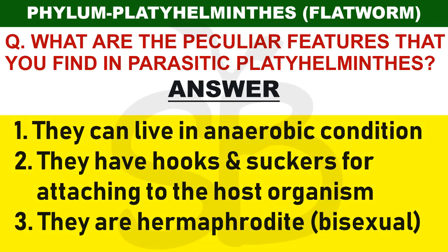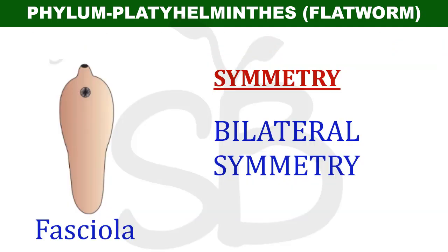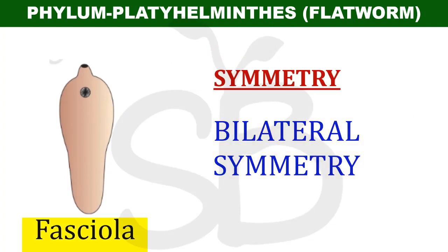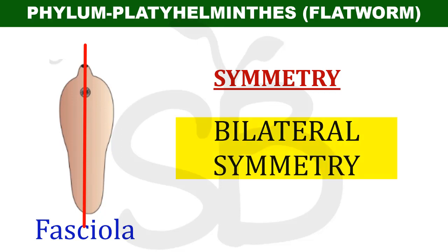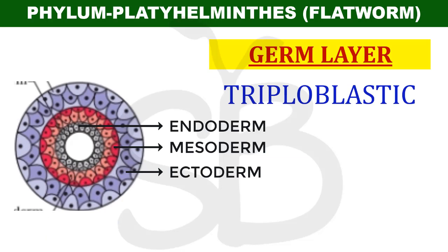Next is symmetry. It is bilateral symmetry - for example, fasciola. These are two equal halves, so they are all bilaterally symmetrical organisms. Next, the germinal layers - they have three germinal layers, so they are triploblastic.